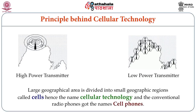The concept is to divide a big geographical area into a number of smaller geographical areas, each handled by a low-power antenna. The frequencies allocated to that antenna can be reused after a certain distance. The name given to those smaller units was 'cells' — hence the name cellular technology, and the conventional radio phones became known as cell phones. In this module, we will be discussing cellular systems and technologies in detail.